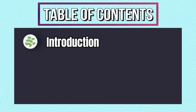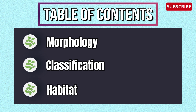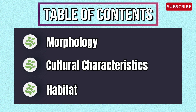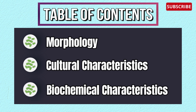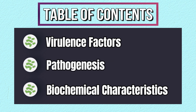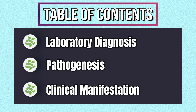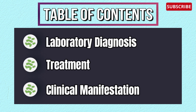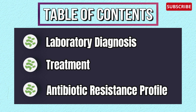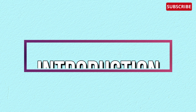Let's begin with the table of contents: introduction, classification, habitat, morphology, cultural characteristics, biochemical characteristics, virulence factors, pathogenesis, clinical manifestation, laboratory diagnosis, treatment, antibiotic resistance profile, and lastly, prevention.